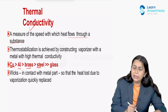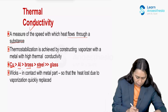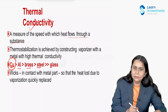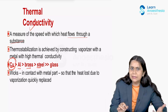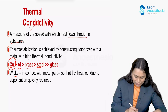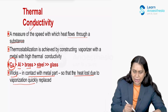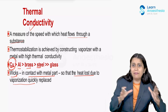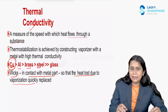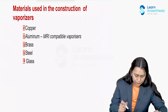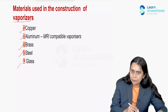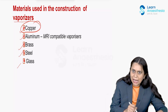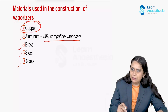Previously, vaporizers were made of glass and steel. Today, most vaporizers are made of copper. Not only the metal — we also have wicks surrounding the metal which compensate for heat loss. Wicks in contact with the metal allow the heat lost due to vaporization to be quickly replaced, though this is a finite replacement. Materials used for construction of the vaporizer include copper, aluminium, brass, steel, and glass. Copper is nowadays most commonly used; aluminium is used for MRI-compatible vaporizers.